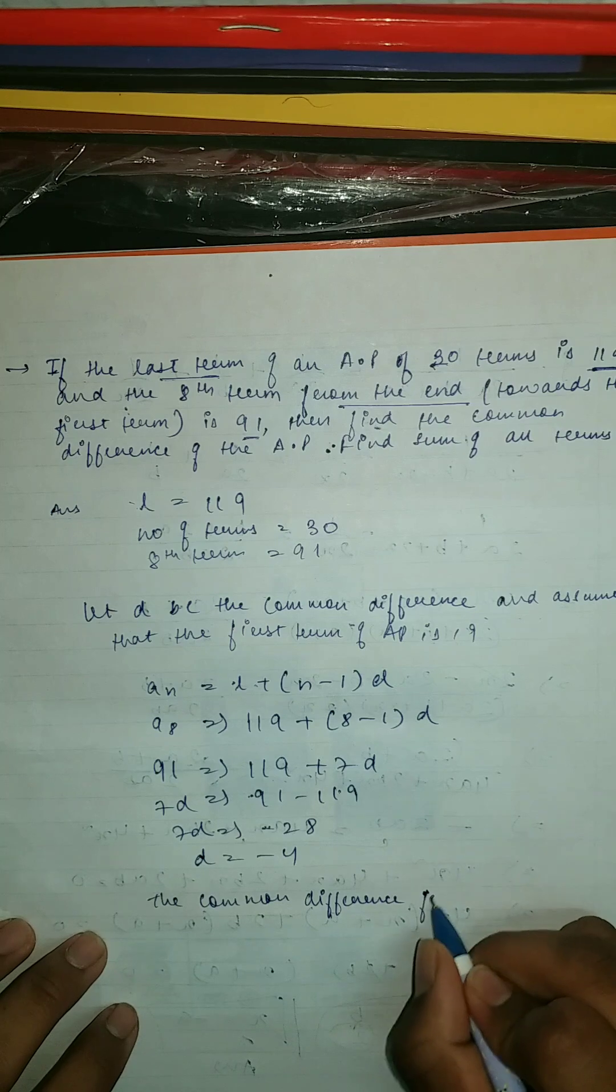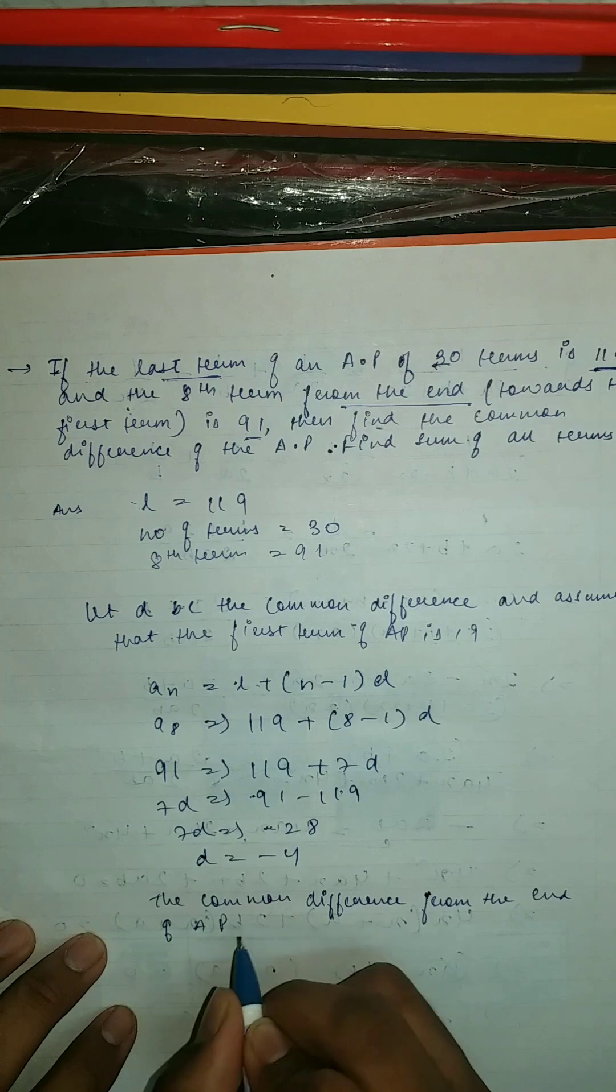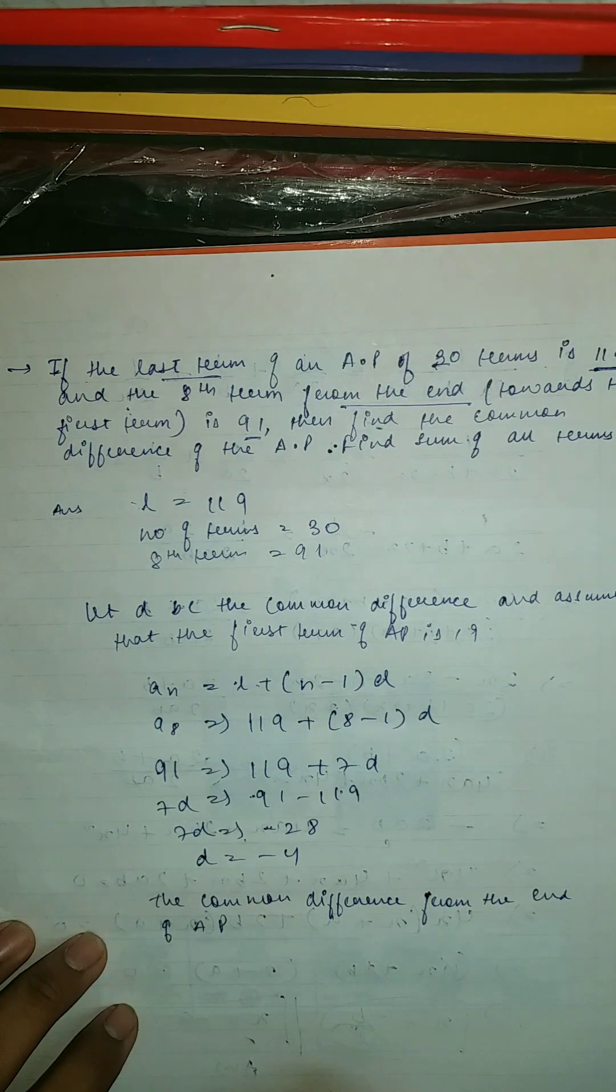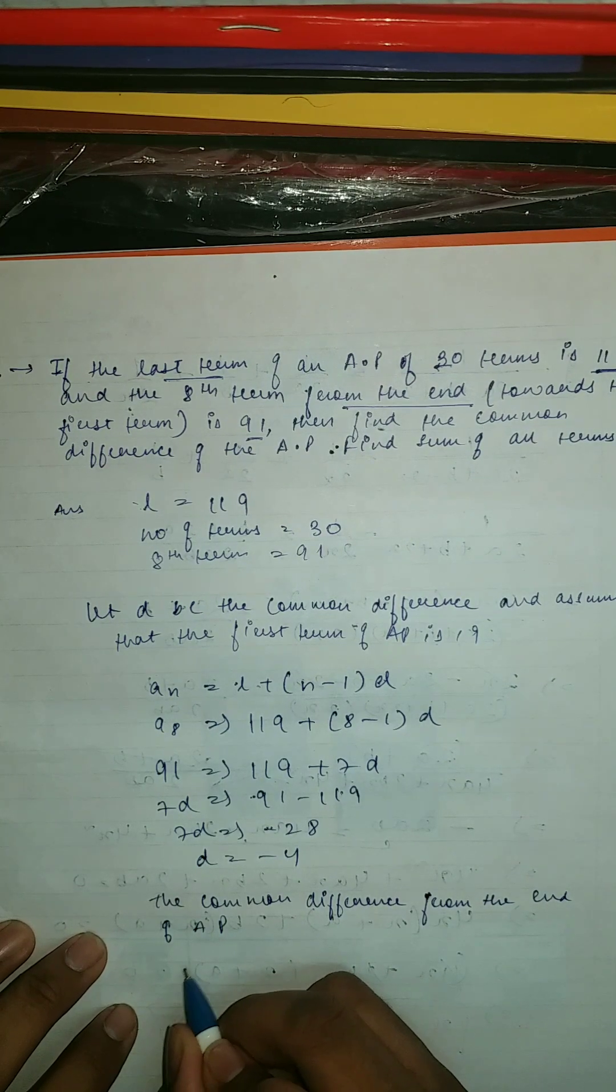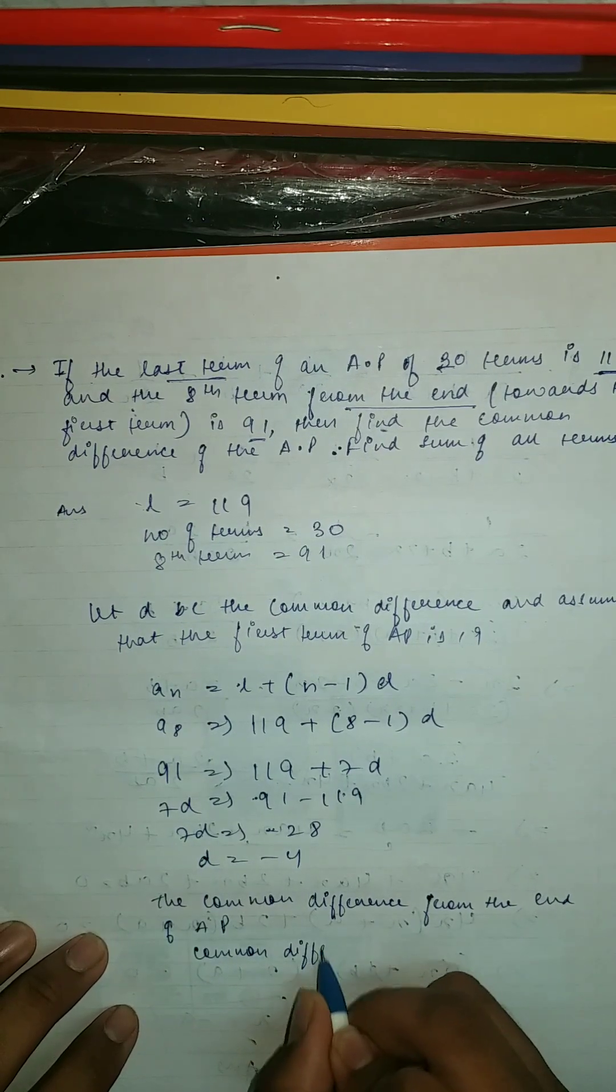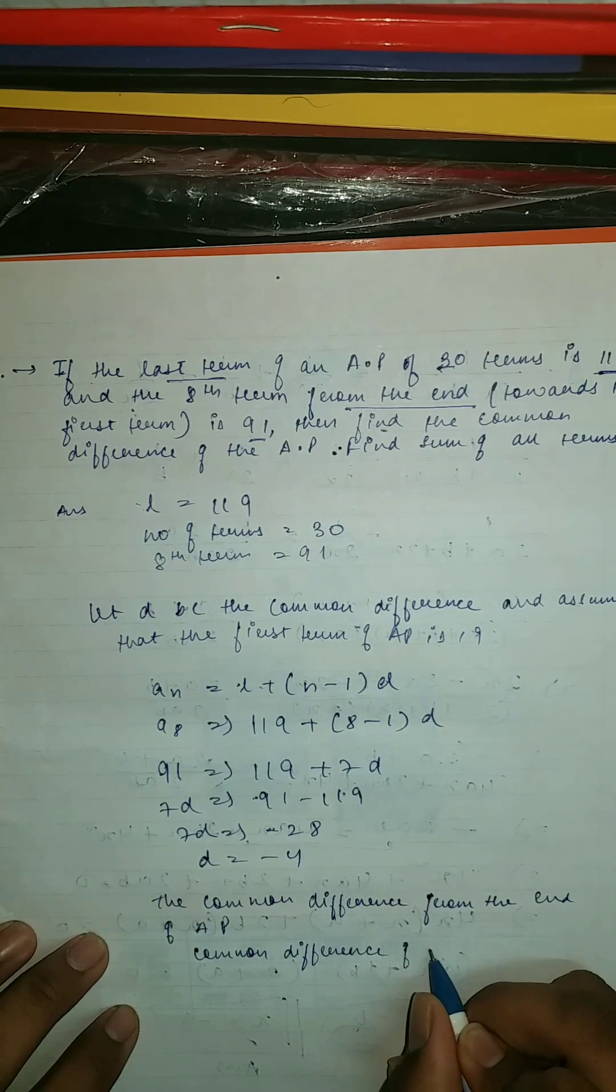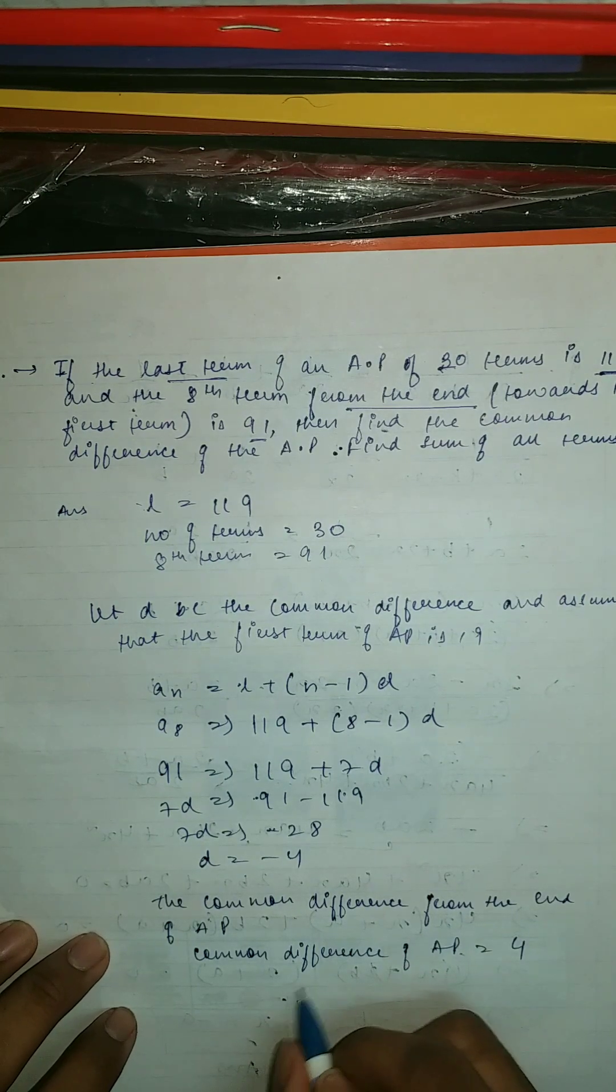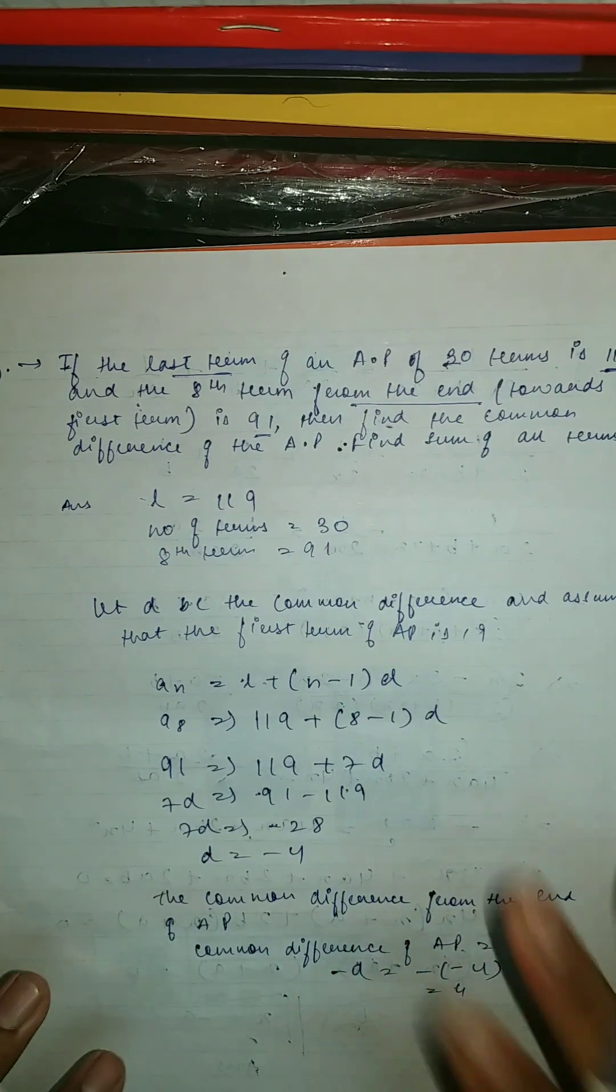Which is equal to D is equal to minus 4. So the common difference from the end of AP. The common difference of AP is 4, why? Because it is minus D, so minus of minus 4 is equal to 4.